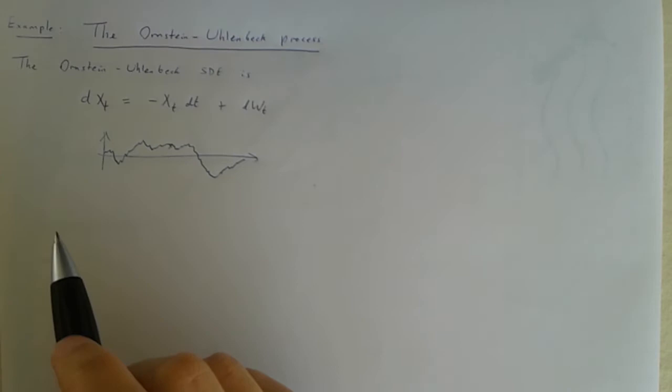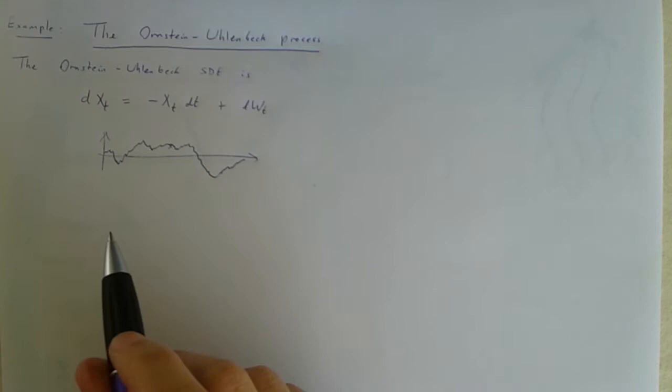So as compared to just a Brownian motion and that's what you should do, you should compare this xt to just the Brownian motion wt. They both have the same speed always. Speed one.